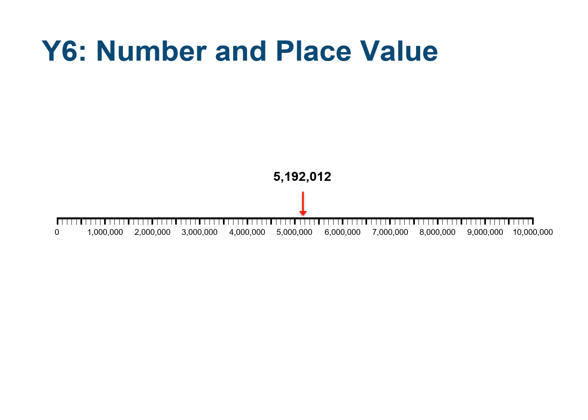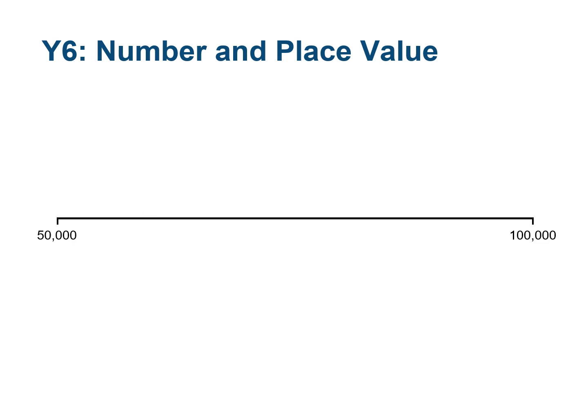As well as understanding the quantity associated with numbers, pupils need to understand the position of numbers in the linear number system. They should be able to mark them on partially marked number lines at a range of scales — for example, placing seven-digit numbers on a number line marked in millions or on a number line marked in hundred thousands. Pupils should also be able to make reasonable estimations about the position of numbers on unmarked number lines. Teach pupils to mark midpoints to support them with this; for example, 75,000 is the midpoint, so 65,000 is about here relative to 50,000 and 75,000.